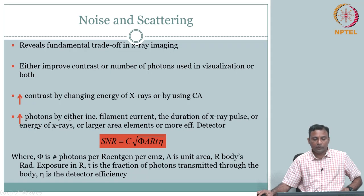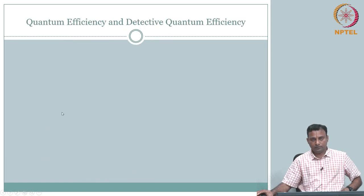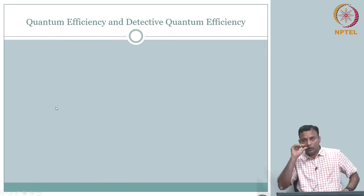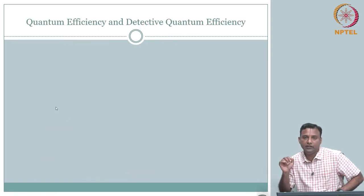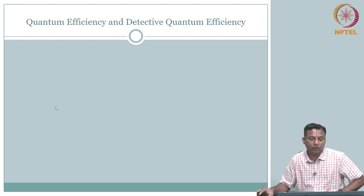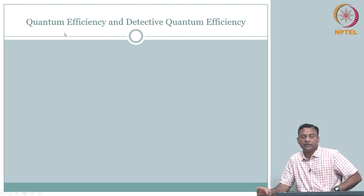If I can use a more efficient detector, I can definitely get better signal-to-noise ratio for all other parameters unchanged. We need to characterize detector efficiency — what do we mean by it and how do we improve it. The SNR is contrast times √N_B. N_B can be written in terms of contributing factors: φ is the number of photons per roentgen per cm², a is unit area, r is exposure, t is fraction of photons transmitted through the body, and η is detector efficiency. All these contribute to increasing N.